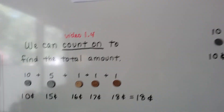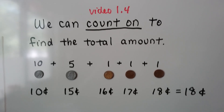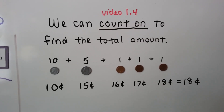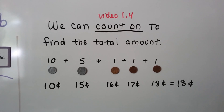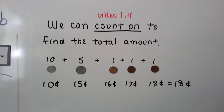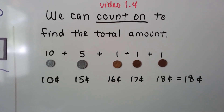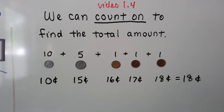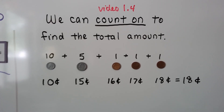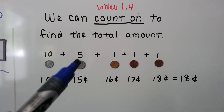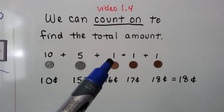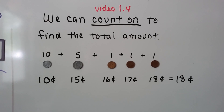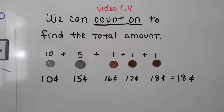We learned about counting on in video 1.4, and there's a link for that video in this description also. We can count on to find the total amount. Here we have a dime, a nickel, and three pennies. That's worth ten cents, five cents, and one cent, one cent, and one cent. So we can find the total by counting on.